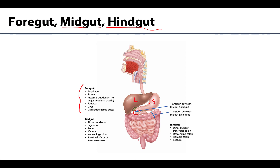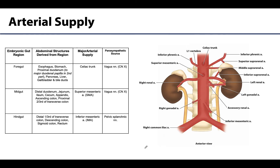The midgut continues from the duodenum and includes most of the small intestine and the more proximal portions of the large intestine, transitioning into the hindgut about two-thirds of the way along the transverse colon. So the proximal portion of the transverse colon is midgut, whereas the distal one-third is hindgut derived. These subdivisions have unique arterial supply sources, and while there are small areas of overlap, the basic pattern is consistent and helps in understanding blood supply.